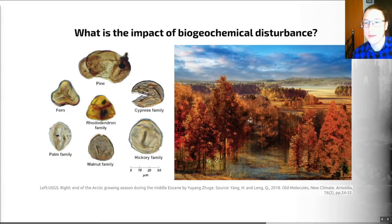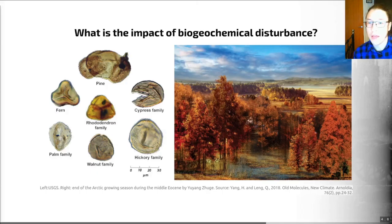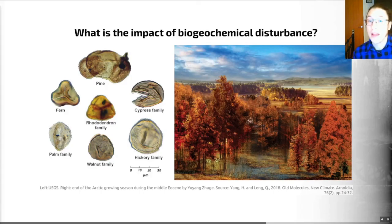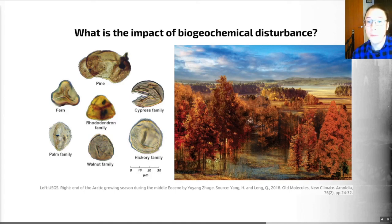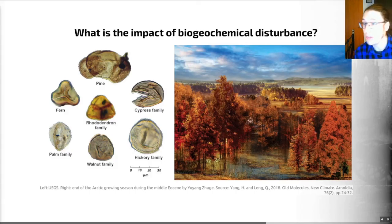We can use pollen evidence — examples recovered from an arctic core are shown on the left here — to show that during this time period the arctic climate was far warmer than it is today. A reconstruction shows the Paleocene Arctic was dominated by mixed conifer-hardwood forests. We know also that the PETM led to the acidification of oceans, resulting in the dissolution of seafloor carbonates and a decrease in carbonate production. That was followed by a pulse of biogenic carbonate accumulation during the recovery, and we know that recovery took tens of millennia.